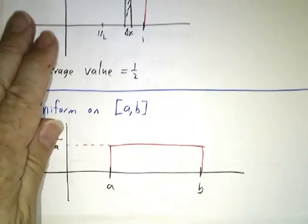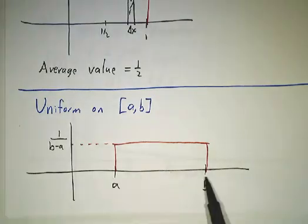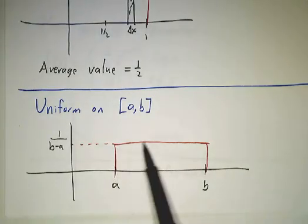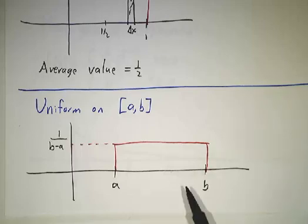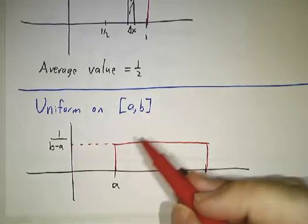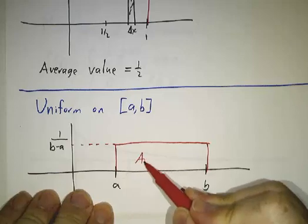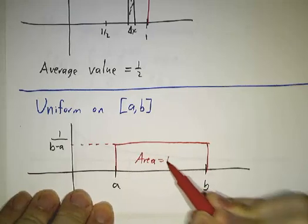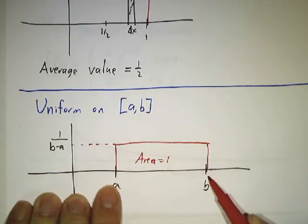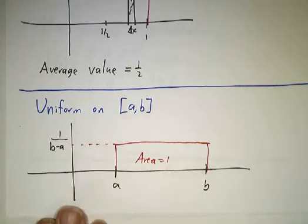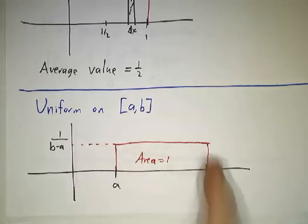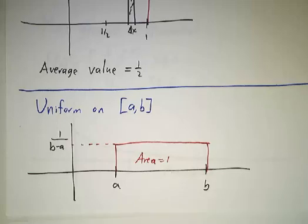Now you also talk about the uniform distribution on an interval from a to b. So it's a certain constant here. And what is that constant? Well, the total area under the curve has to be one. And since the width is b minus a, the height must be one over b minus a. So that describes the uniform distribution on an interval. So if something is distributed uniformly between three and five, then it has probability density a half between three and five.